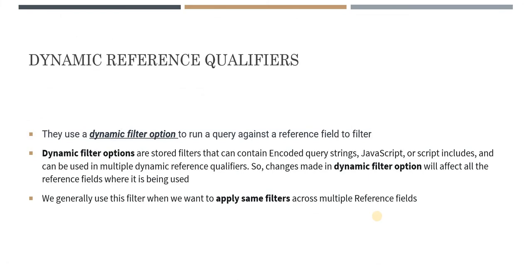Next is dynamic reference qualifiers. These use a dynamic filter option to run a query against a reference field to filter results. Dynamic filters are present in ServiceNow where you actually have to create those filters — they are stored in a separate table, and then we use those filters in the reference field. These dynamic filter options can be encoded queries, JavaScript, or script includes. Dynamic reference qualifiers mostly use dynamic filter options because they are reusable — if you've created a dynamic filter option and want to use it again in other fields, you can create it once and always refer to it.